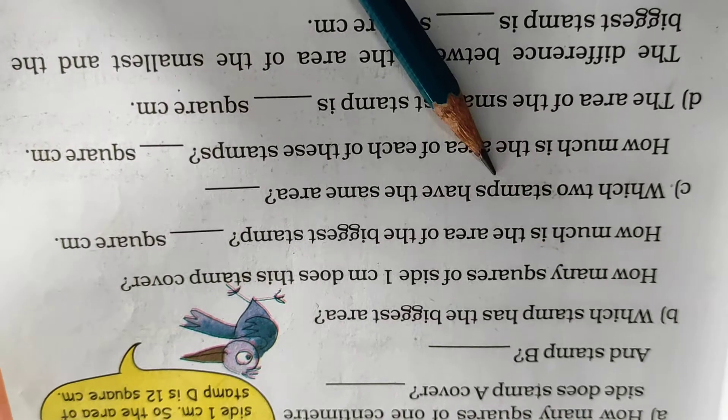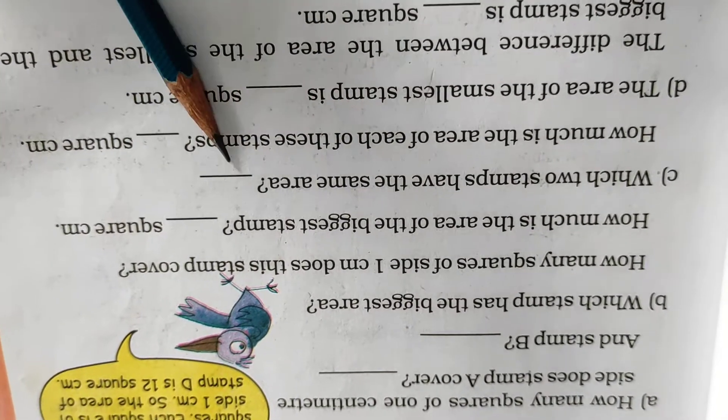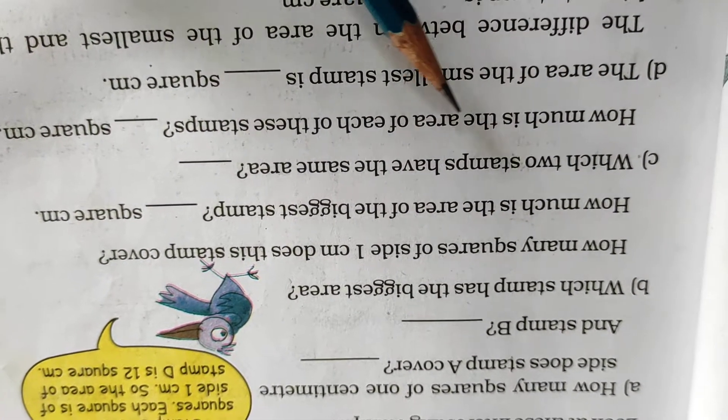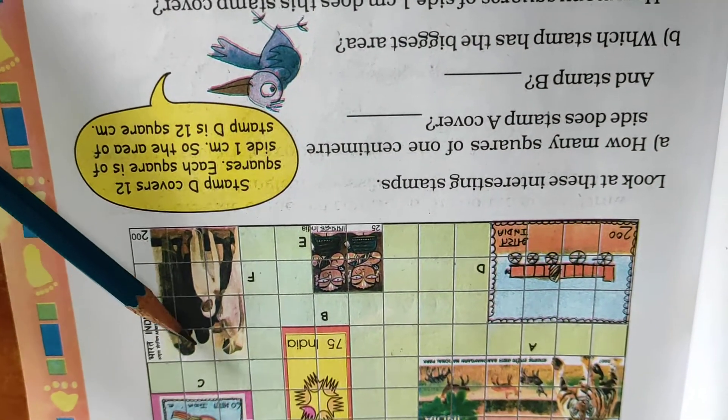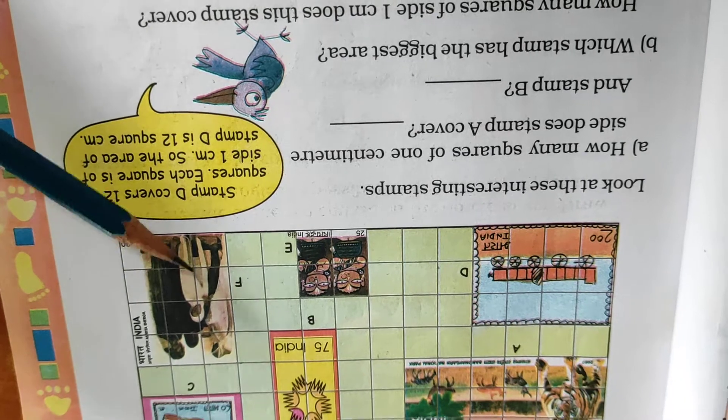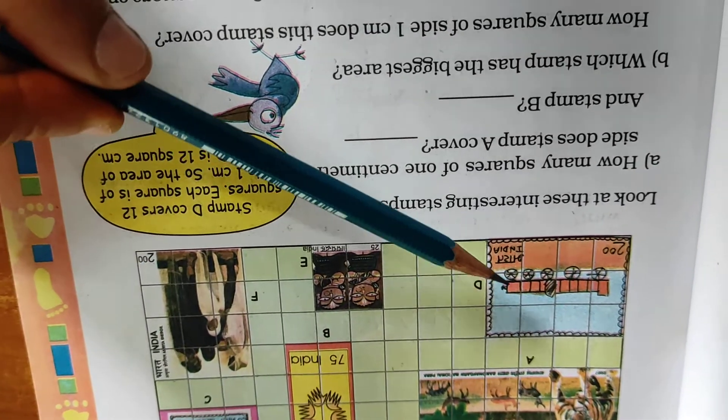Now which two stamps have the same area? Already I told you how much is the area of each of this stamp. How much is the area? 12 square cm.